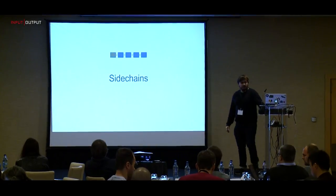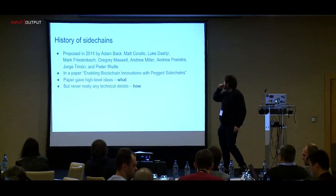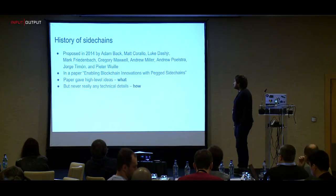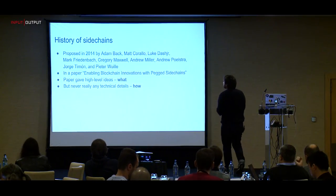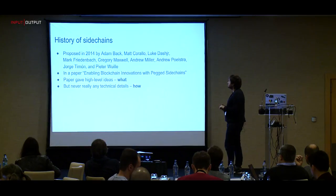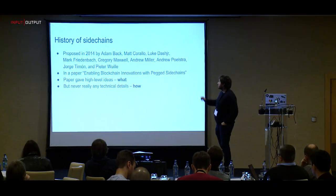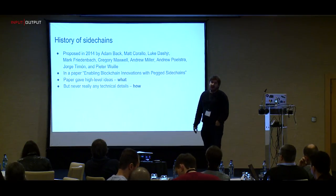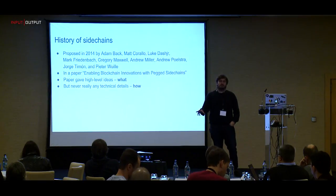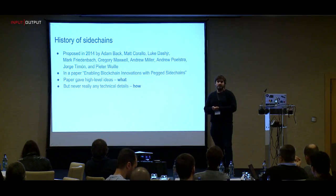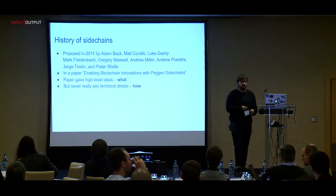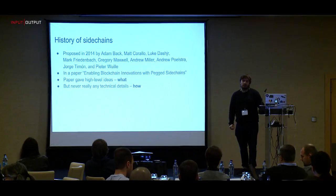For sidechains, here's the history. In 2014, it was proposed by people now mostly at Blockstream — Adam Back, Mark Friedenbach, and Andrew Miller and others. They wrote a paper called 'Enabling Blockchain Innovations with Pegged Sidechains,' which was a high-level overview of what they wanted to achieve, but without technical details of how to implement it, especially not for Bitcoin.